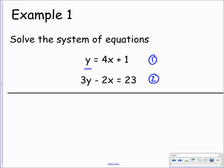We label them so that we don't need to write out the full equation all the time. This first equation tells us that y is equal to 4x plus 1. If we want to substitute that into the second one, what we're really going to be doing is replace every y that we see with this whole thing: 4x plus 1. We'll start by stating what we're going to do — substitute equation 1 into equation 2. So any time we see y, we're going to replace it by 4x plus 1.